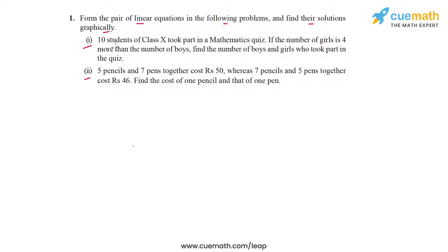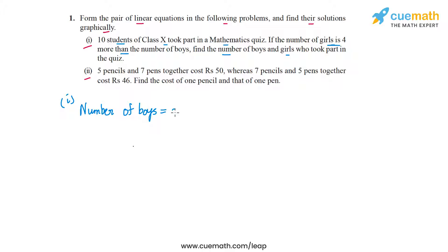It says that 10 students of class 10 took part in a math quiz. If the number of girls is 4 more than the number of boys, find the number of boys and girls who took part in the quiz. The two unknowns here are the number of boys and the number of girls. Let's assume the number of boys is x and the number of girls is y.